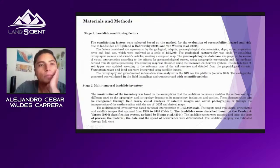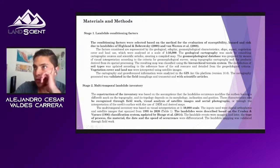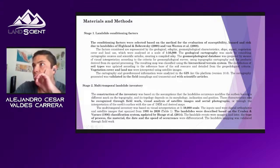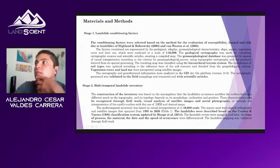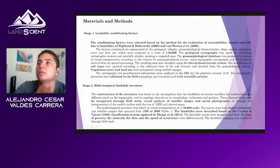What did we do? First, we analyzed the landslide conditioning factors. The second stage was the multi-temporal landslide inventory. The conditioning factors were worked at a detailed scale, including geological, geographic, and geomorphological characteristics, as well as vegetation cover and land use, following established methods for evaluation of susceptibility, hazard, and risk due to landslides.